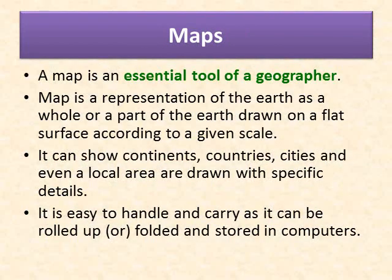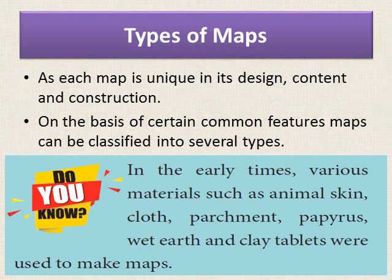Now children, come let us see what maps are. A map is an essential tool of a geographer. A person who is into the study of earth definitely needs a map. Map is a representation of the earth as a whole or a part of the earth drawn on a flat surface according to the given scale. The earth is spherical in shape — we can say it is in the shape of a sphere which is pressed at both top and bottom. When we represent the earth on paper, it is given according to the scale, for example one kilometer is equal to one centimeter.